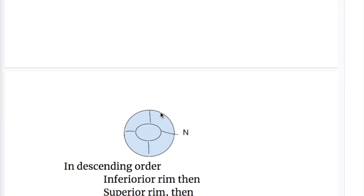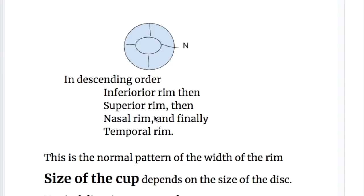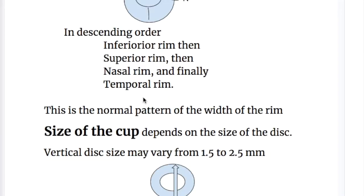Where is the neuroretinal rim widest? In descending order, it is widest at the inferior rim, then the superior rim, then the nasal rim, and narrowest at the temporal rim. This is the normal pattern of the width of the rim.